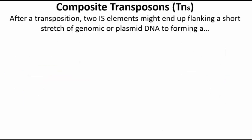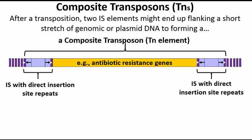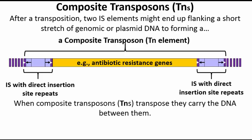If a pair of IS elements should come to lie close to one another, they could be separated by a relatively short stretch of genomic or plasmid DNA. The IS elements and the DNA between them could then become a composite transposon, or a TN element, that can transpose as a unit. TN elements on plasmids, for example, typically contain antibiotic resistance genes.